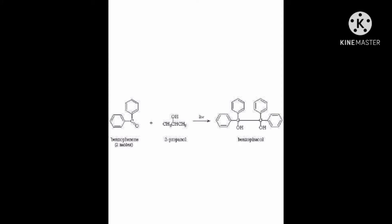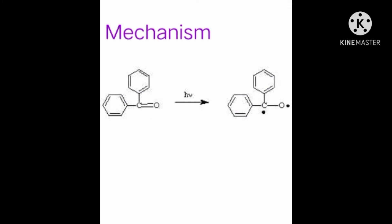Here, isopropyl alcohol acts as both solvent and reagent. Primary process is the excitation of benzophenone by absorption of light of appropriate wavelength around 350 nm generates free radicals.